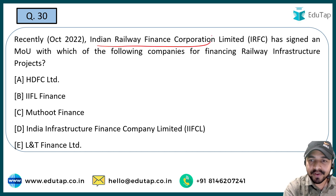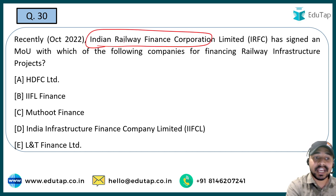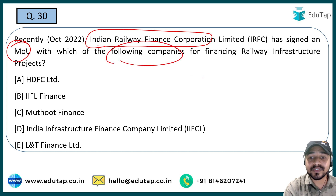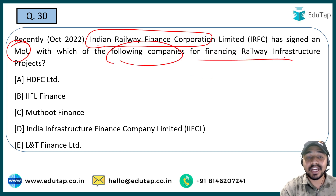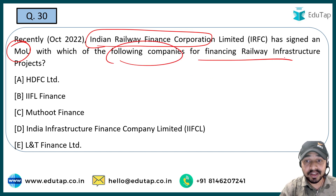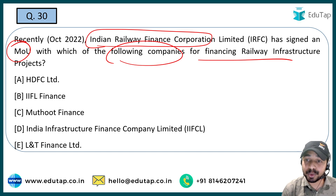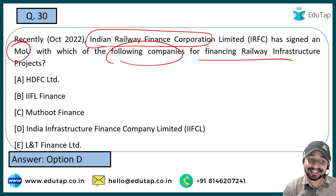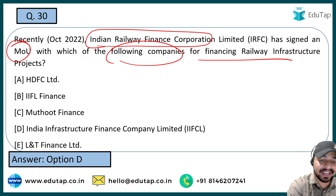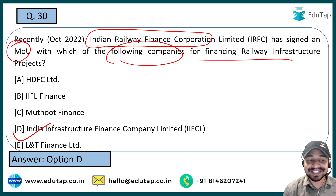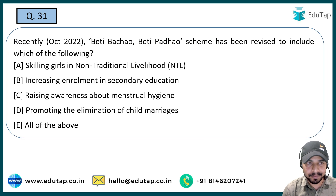The next question: Indian Railway Finance Corporation Limited has signed an MOU with which of the following companies for financing railway infrastructure projects? The right answer is IIFCL — India Infrastructure Finance Company Limited.